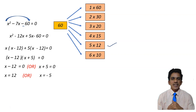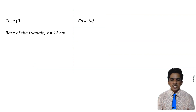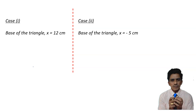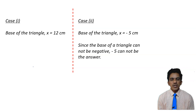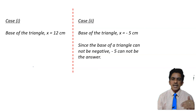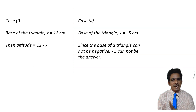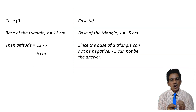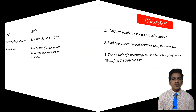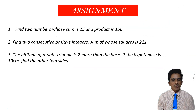We got two solutions. In case 1 the base is x equals 12, and in case 2 the base is x equals minus 5. Since the base of a triangle cannot be negative, we reject x equals minus 5. Taking x equals 12: the base is 12 cm and the altitude is x minus 7 equals 12 minus 7 equals 5 cm. So this is how you identify the variables, form the quadratic equation, and solve it by factorization. For today's assignment, solve these three problems and post your answers. Thank you.